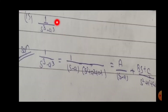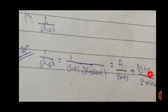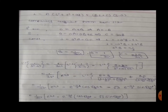Question 15: 1/(s³-a³). We factorize using a³-b³ = (a-b)(a²+ab+b²). Writing into linear factors: A/(s-a) plus (Bs+C)/(s²+a²+as), since the denominator has a quadratic quantity.